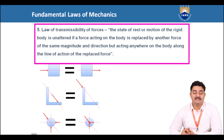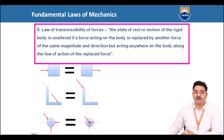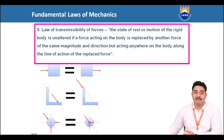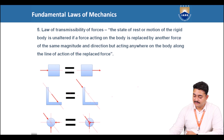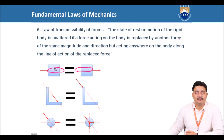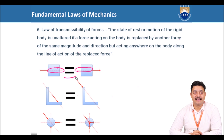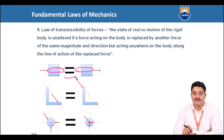The law of transmissibility of forces states that the state of rest or motion of a rigid body is unaltered if a force acting on the body is replaced by another force of the same magnitude and direction but acting anywhere on the body along the line of action of the replaced force. The dotted lines in the figure are the line of action of the forces. When the same magnitude force is replaced anywhere on the line of action, there will be no change in the condition of the body — that is, no change in speed or direction of motion.